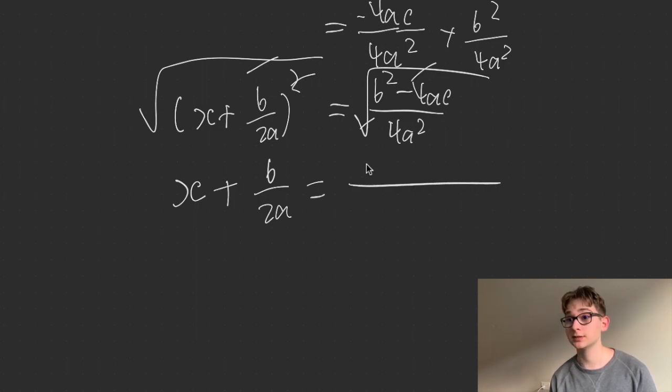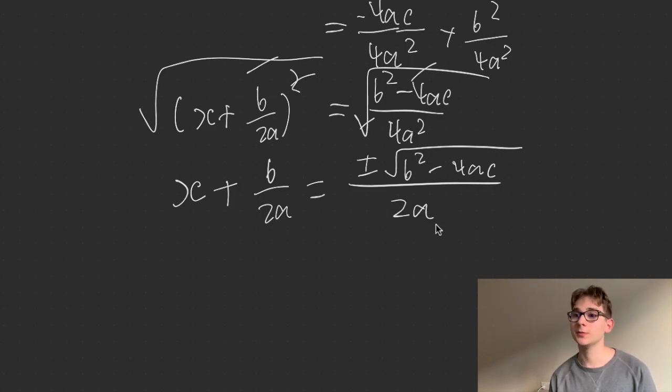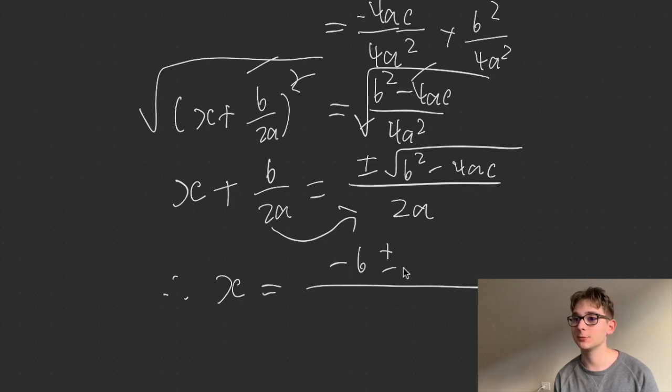So then equals, don't forget, there's a plus or minus, square root of b squared minus 4ac, and then root 4, which is just 2, and then root a squared, which is just a. And then you can move this b on 2a to the other side and combine the fractions, because 2a and 2a on both sides. Therefore, x is then going to be equal to minus b plus or minus square root of b squared minus 4ac on 2a.